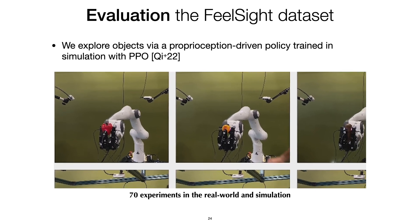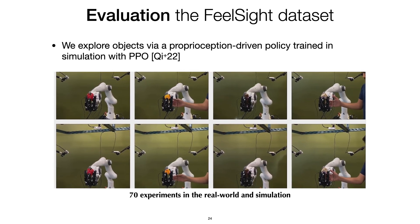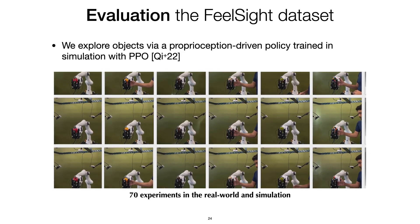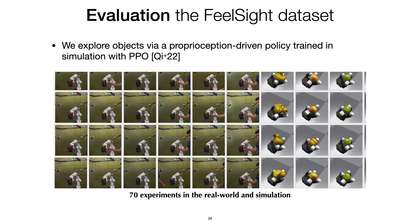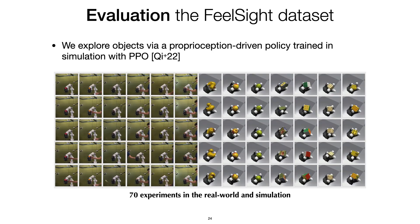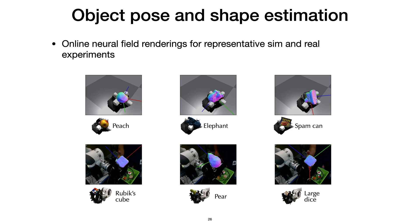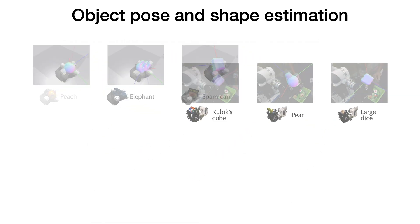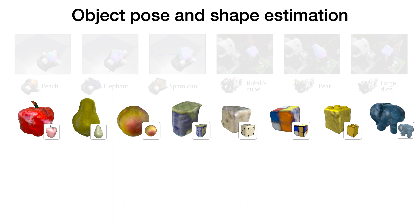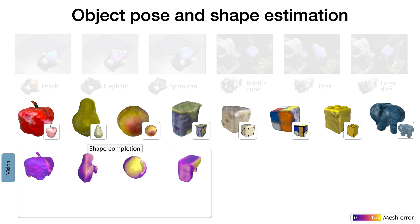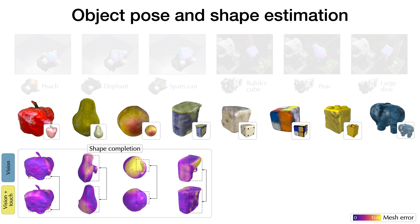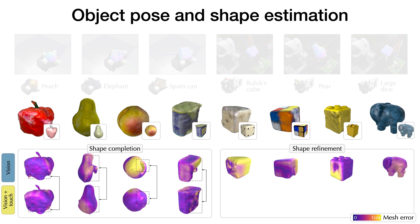We evaluate over 70 different experiments collected in the real world and in simulation. For object rotation, we train a reinforcement learning policy in simulation that uses just proprioceptive state history to predict the next action. In our first result, we look at reconstructing and tracking novel objects and see the benefits of multimodal perception. Qualitatively, here are some final reconstructions overlaid with the tracked poses, and here are the meshes generated from marching cubes on the neural field. We observe that incorporating touch can lead to two distinct results: more complete reconstructions from incorporating touch information, and more refined surfaces from incorporating local sensing.